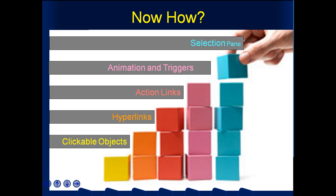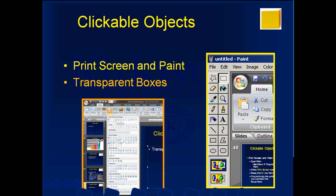The building blocks that you need are: how to create clickable objects, what are hyperlinks, what are action links, how to do animation and triggers — although we're really going to just focus on triggers — and the selection pane, which is pretty important.